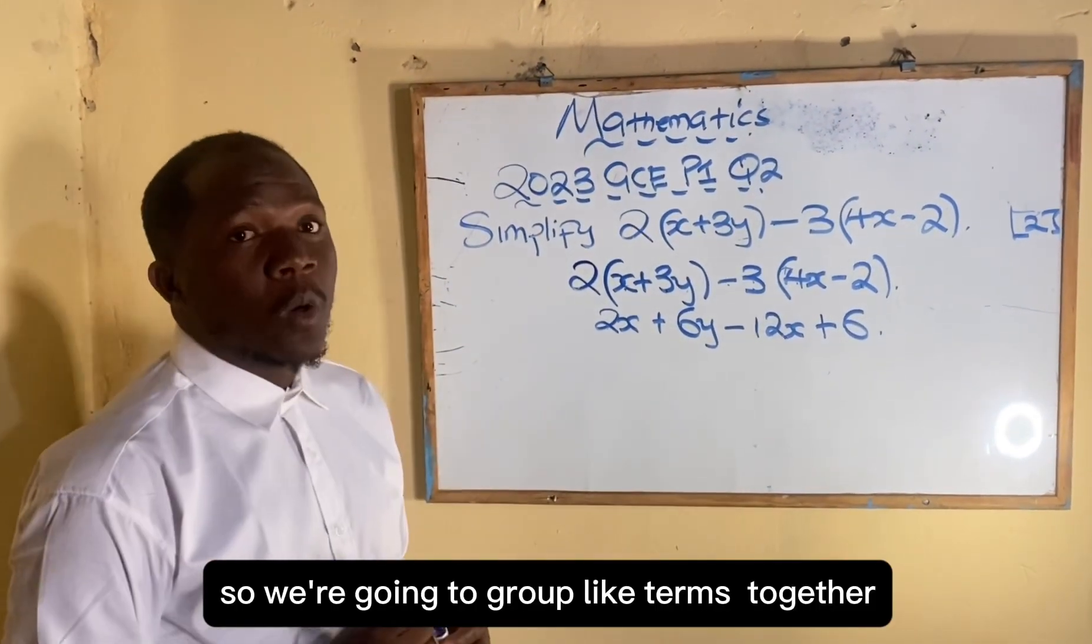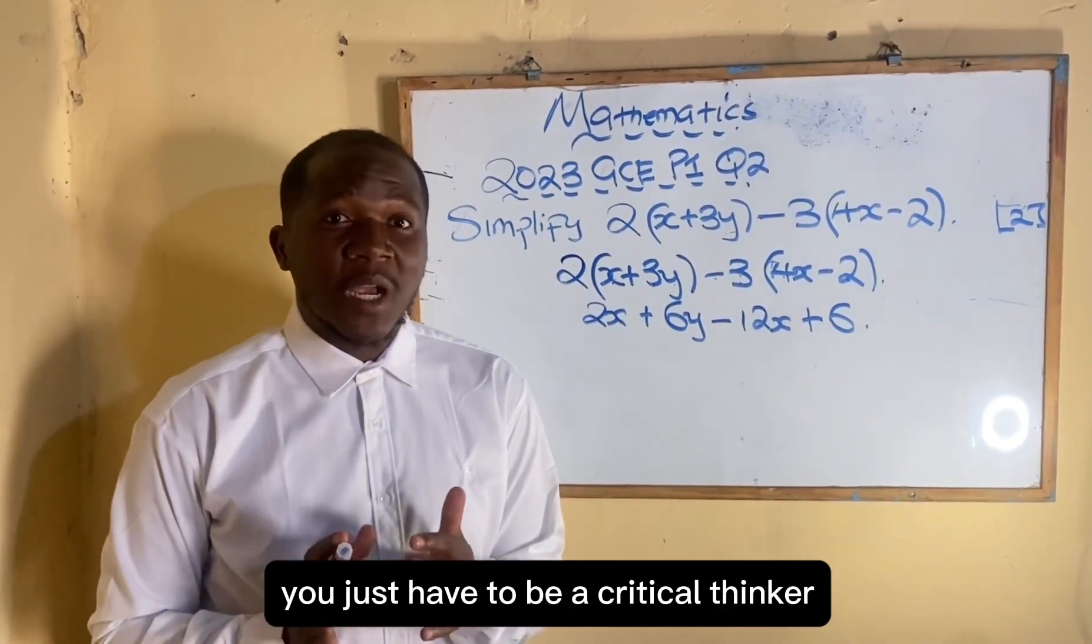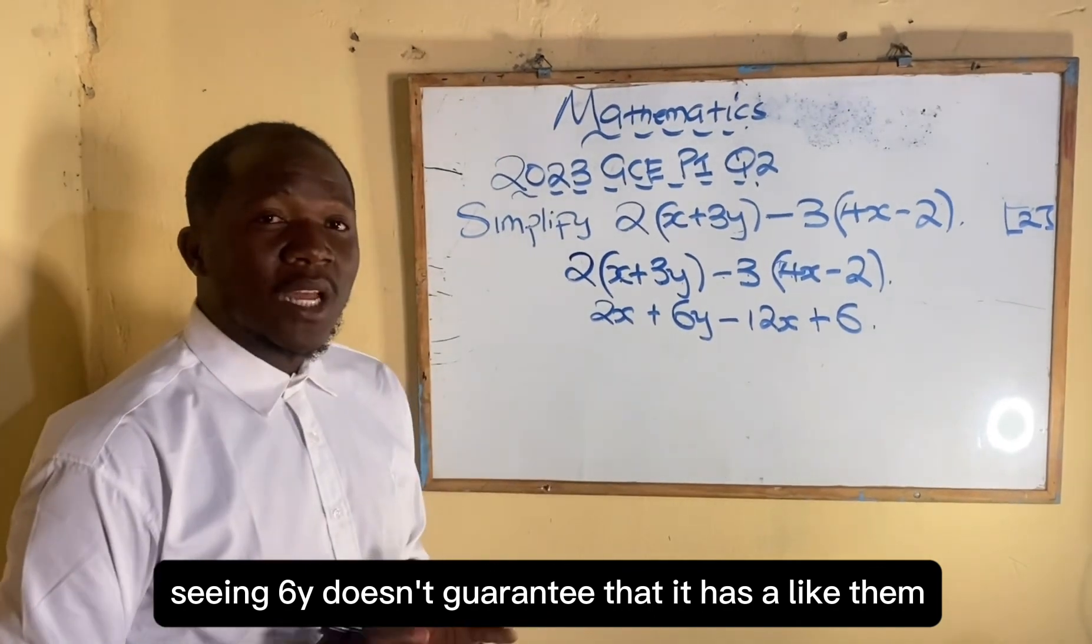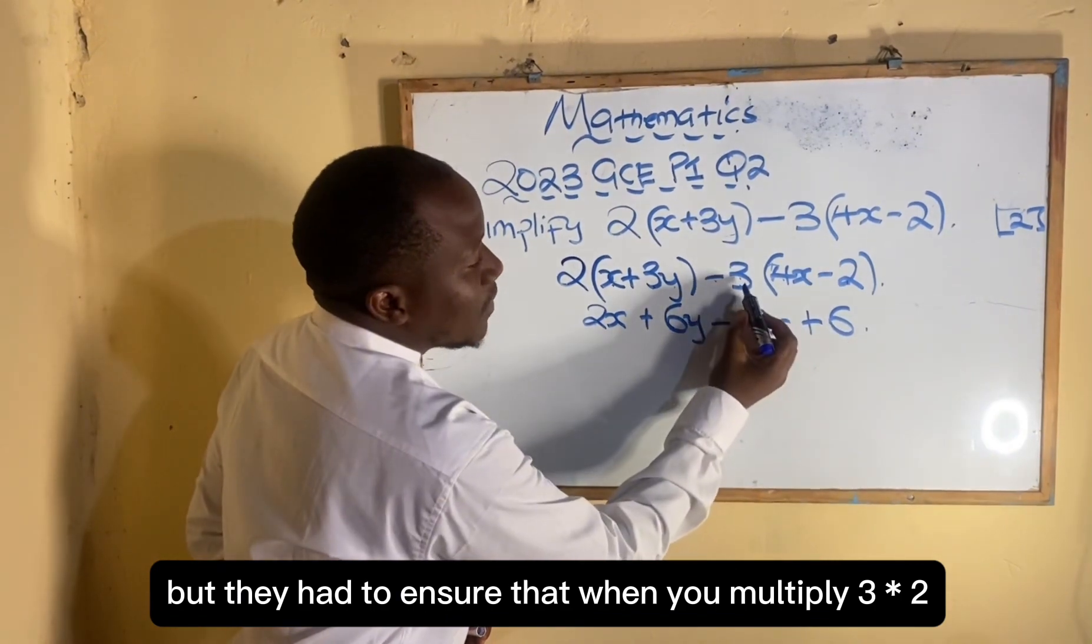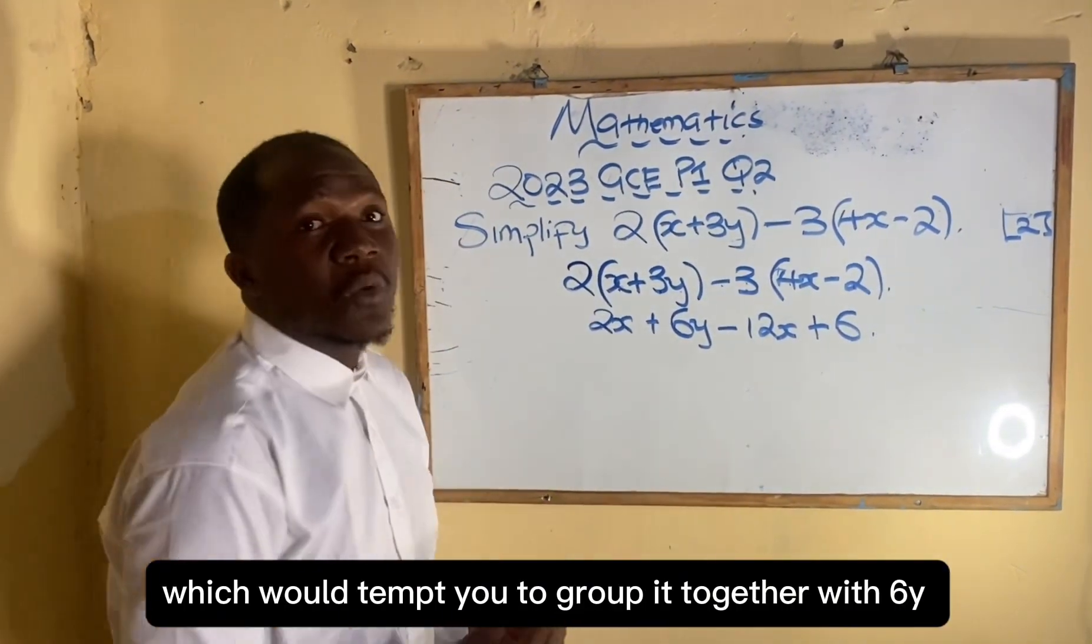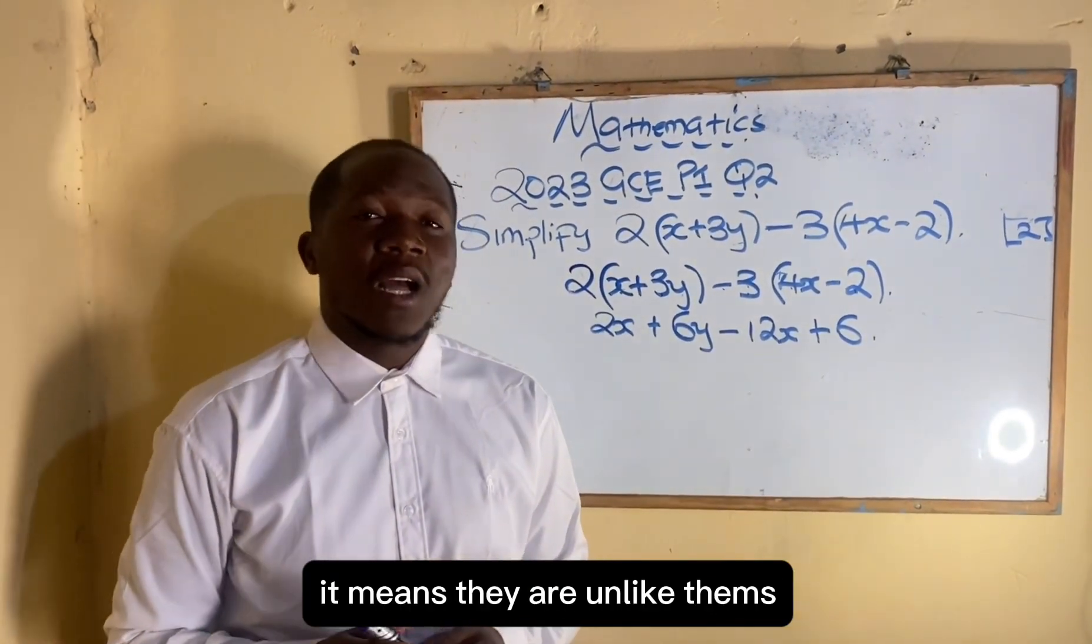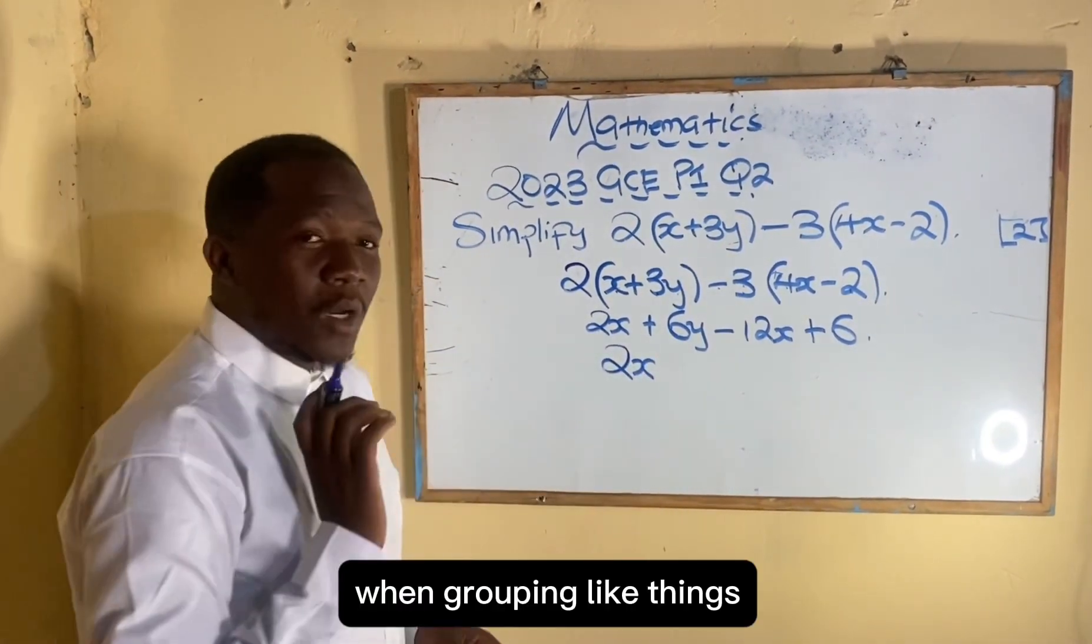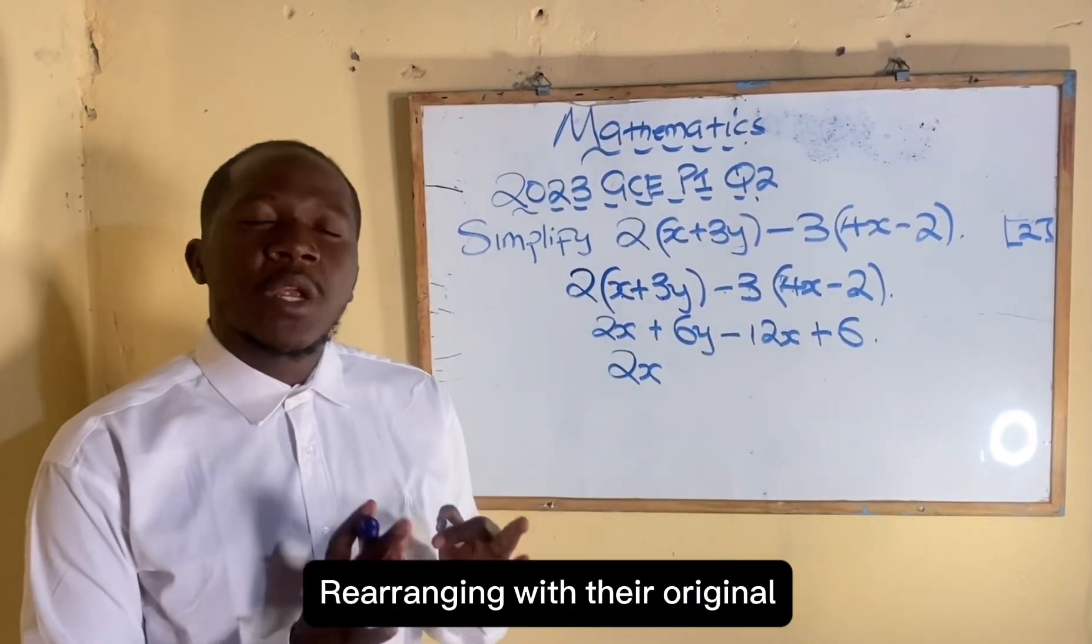Having done that it means we are now liable to simplify, so we're going to group like terms together. Mind you, an examiner is very clever, you just have to be a critical thinker. Seeing 6 here doesn't guarantee that it has a like term, but they had to ensure that when you multiply 3 times 2 there was a 6 which would tempt you to group it together with 6. But as long as this 6 doesn't have a letter, it means they are unlike things.